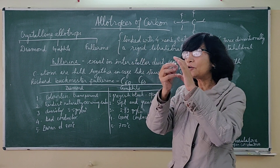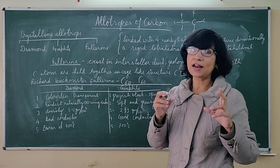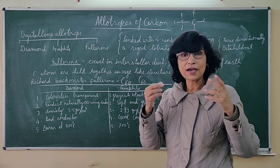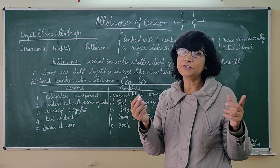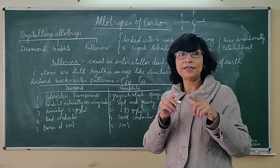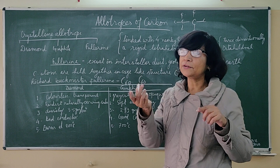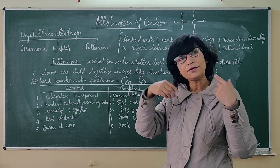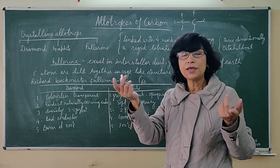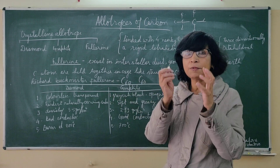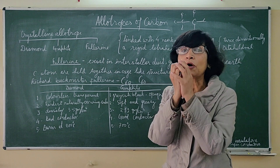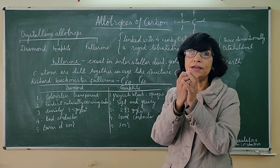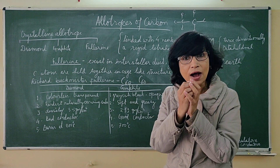Due to the very rigid and compact tetrahedral structure of carbon atoms, in which each carbon atom is joined to another four, and all four of those to another four, and then another four, in this way it becomes very compact, and therefore it is so hard.